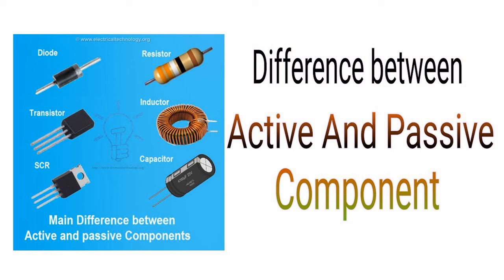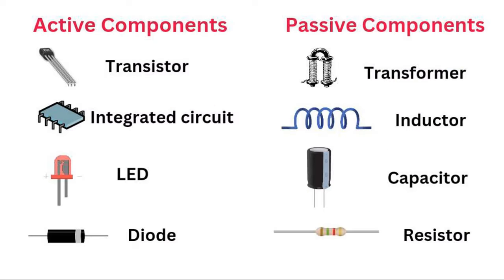Integrated circuits (ICs) are complex assemblies of transistors, resistors, capacitors, and other components on a single chip. They can perform a wide range of functions, from amplification to signal processing, logic operations, and more. Examples include microcontrollers, microprocessors, and operational amplifier ICs. Field effect transistors (FETs) are transistors that use an electric field to control the flow of current. They are often used in amplifier circuits and as switching devices. The symbols for N-channel and P-channel FETs represent the direction of current flow and the control of the electric field.